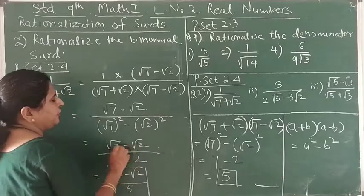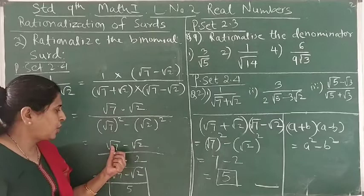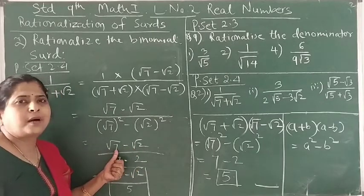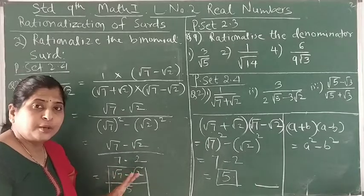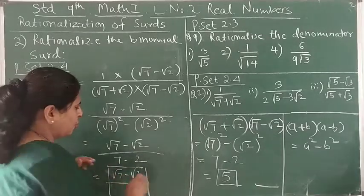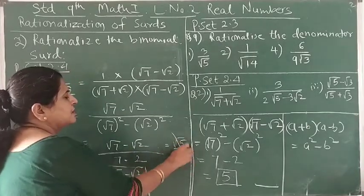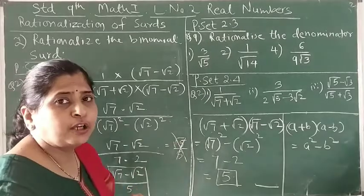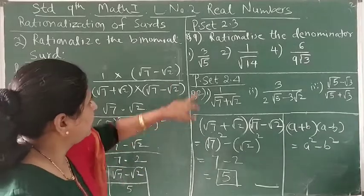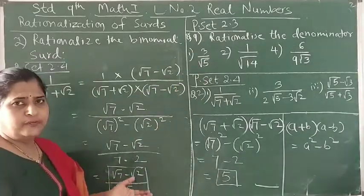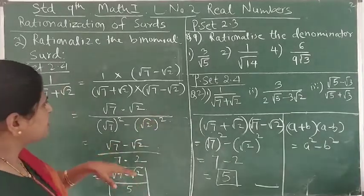We need to understand that we cannot subtract square root of 7 and square root of 2, because they are not like terms — their orders are the same but the radical parts are different. So you have to keep the numerator as square root of 7 minus square root of 2. This is not going to become square root of 5. Sometimes students make this mistake and write square root of 5 upon 5 — that is wrong. The correct answer is square root of 7 minus square root of 2, divided by 5. We have rationalized the denominator.